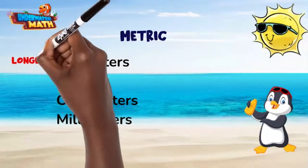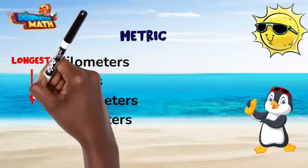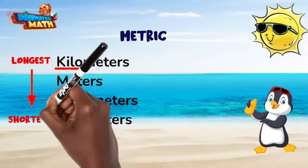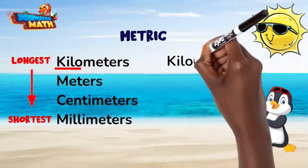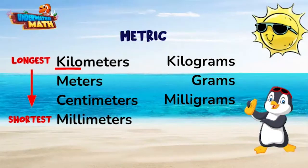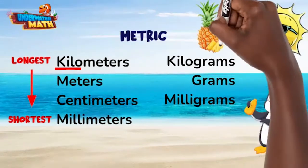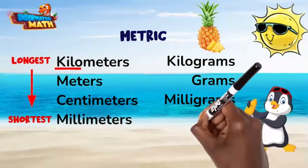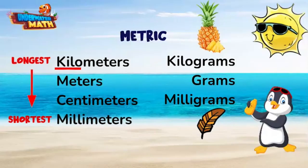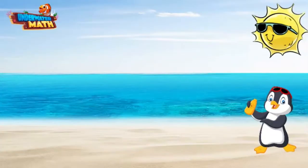Kilometers are the longest and millimeters are the shortest. For weight, we have kilograms, grams, and milligrams. One kilogram is about the weight of a pineapple, and one milligram is about the weight of a feather.